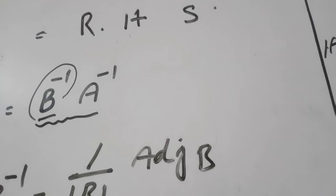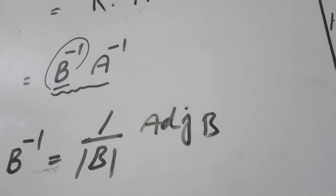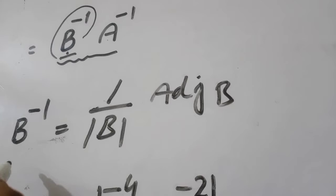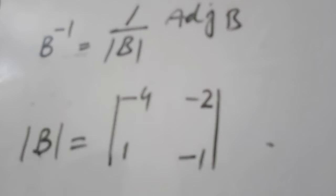अब right hand side: B inverse A inverse। B inverse को A inverse के साथ multiply करना है। Firstly हम find करते हैं B inverse = 1 over det(B) × adjoint(B). det(B) find करते हैं।